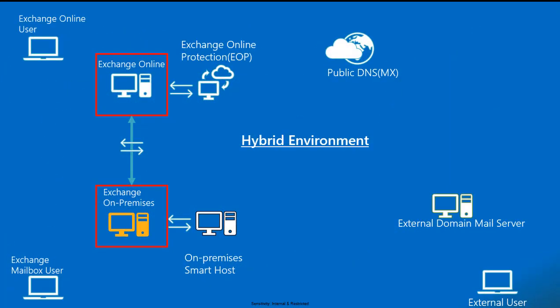Let's consider the setup as mentioned in the picture above. You have pointed your MX record to Exchange Online Protection, configured hybrid Exchange on-premises with Exchange Online, and created connectors to route mails based on email address policies and target address. You have a smart host or edge servers for on-premises mailboxes to receive emails, configured with send and receive connectors to the internal Exchange transport server.